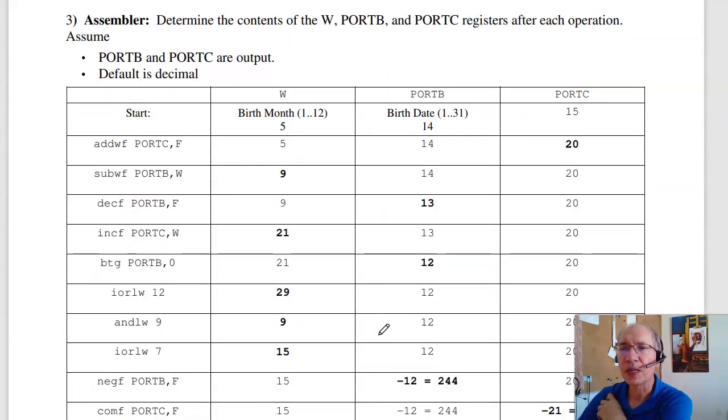Problem 3. This is what happens after each assembler command. The first one is take W, add it to port C, put the result in port C. So 5 plus 15 is 20. Port C becomes 20. Second command. Subtract W from port B, put the result in W. So 14 take away 5 is 9. Put the result in W.